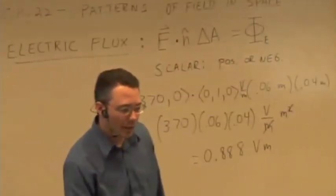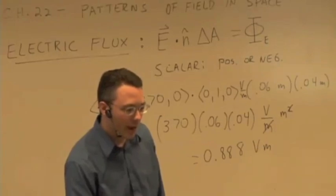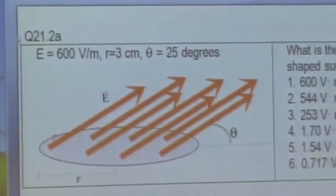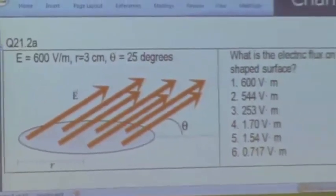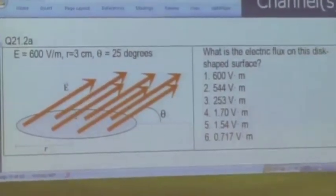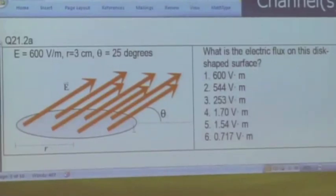Let's try this one. So rather than give you the components now, I'm giving you the magnitude of the electric field. This is a circular area, the area is in the x, z plane, and the field is kind of pointing up and to the right.